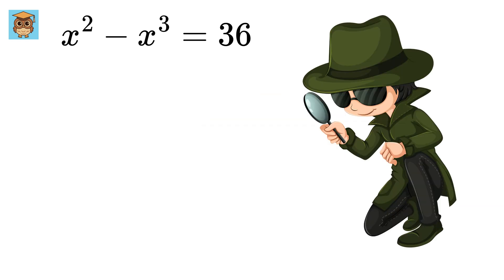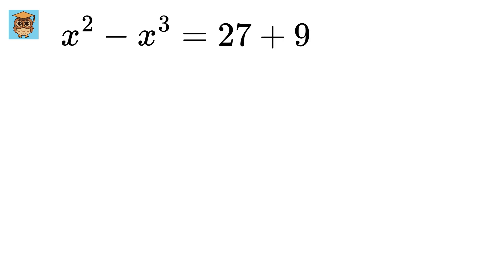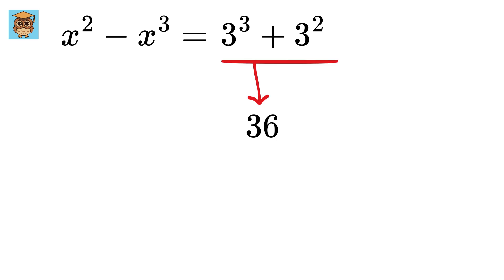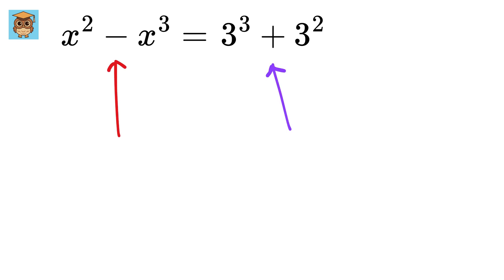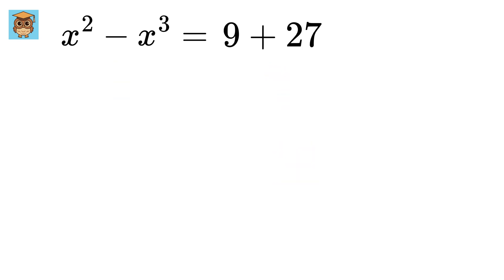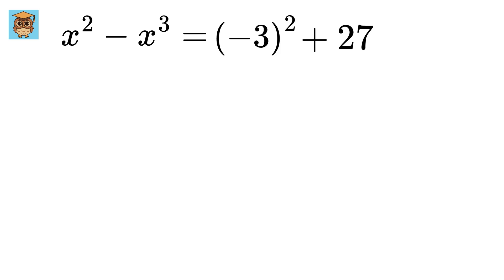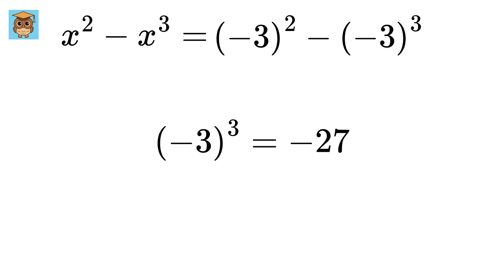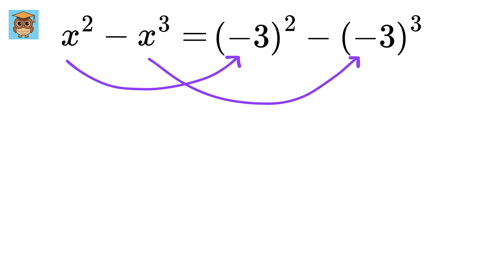As the very first step, if you observe it closely, you can see that 36 can be written as 27 plus 9. And what is 27? It is 3 cubed. And 9 is 3 squared. So 36 can be rewritten as 3 squared plus 3 cubed. But we need a minus sign here, not plus. So we can rewrite 9 as minus 3 squared, and 27 as minus of minus 3 cubed, because minus 3 cubed is minus 27, and adding one more minus makes it a plus. So it is clear that one of the answers will be minus 3, just by hit and trial.